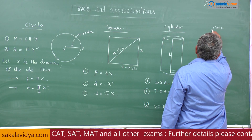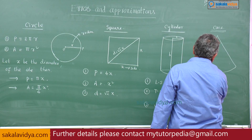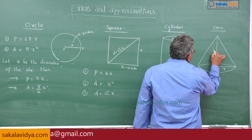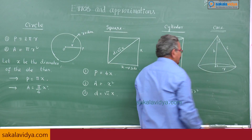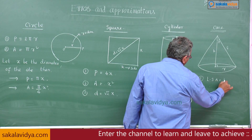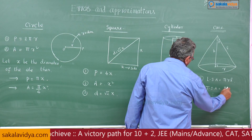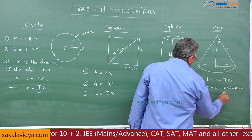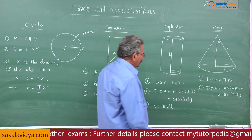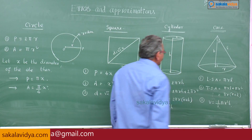Next is the cone. It has height h, base radius r, slant height l, and semi-vertical angle theta. The lateral surface area is pi r l. The total surface area is pi r l plus pi r squared, which is pi r into r plus l. The volume of the cone is V equal to one third pi r squared h.